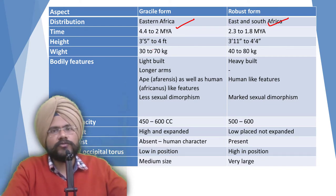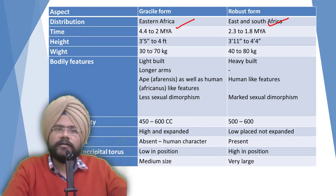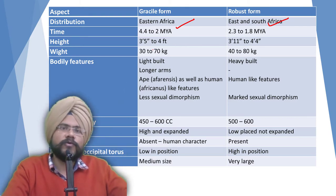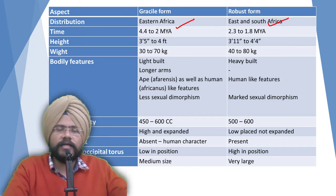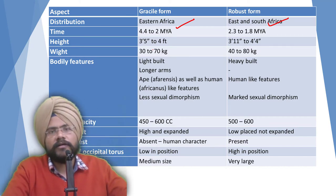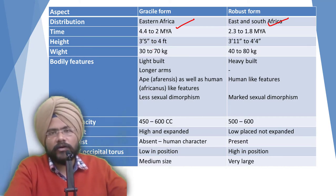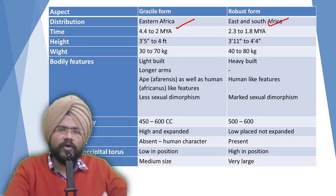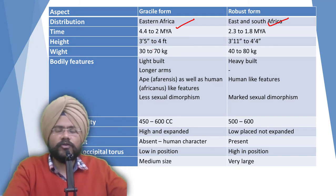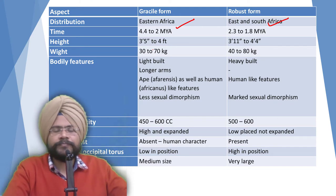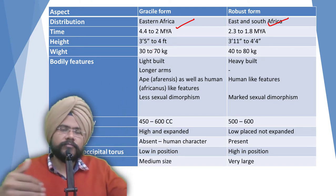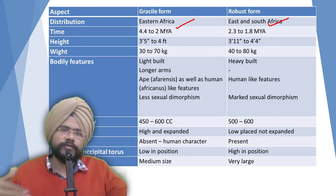Therefore, zoologists said that the robustus form of Australopithecus may be an interlinkage between human forms (Homo) and apes, or the Paranthropus — our older ancestors.